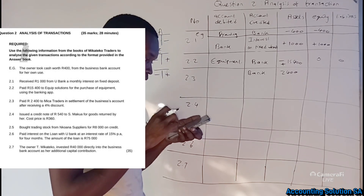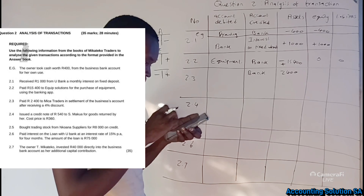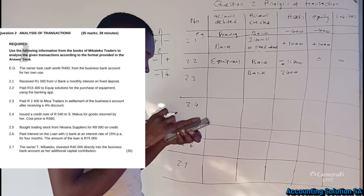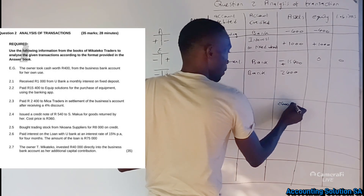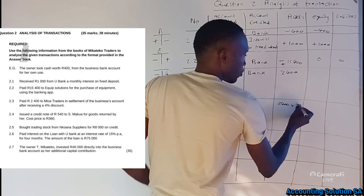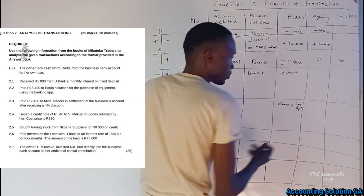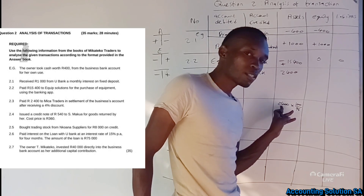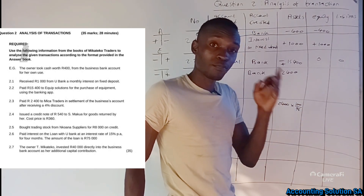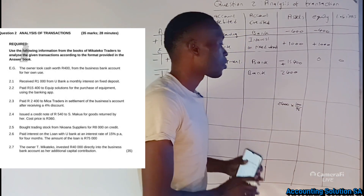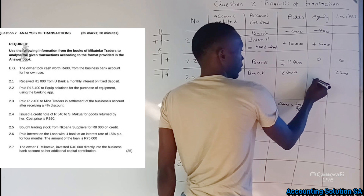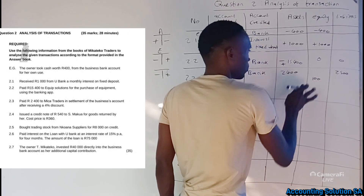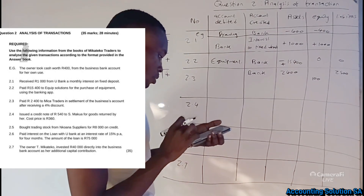The calculation: R2,400 is the amount paid, which represents 96% of the original amount (100% minus 4% discount). So: R2,400 × 100 ÷ 96 = R2,500. The original liability was R2,500. The difference between R2,500 and R2,400 is R100, which is the discount.